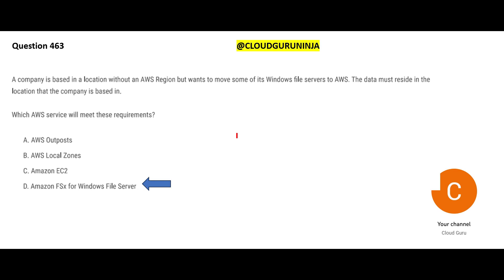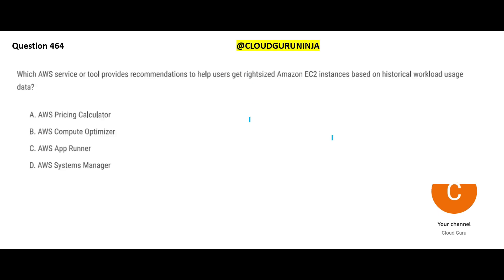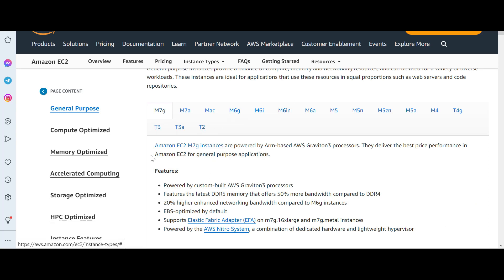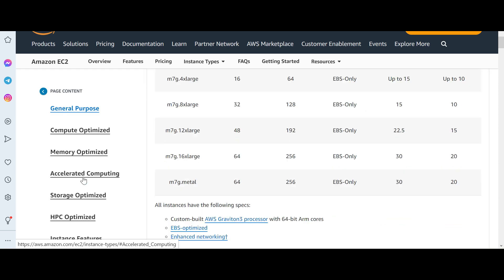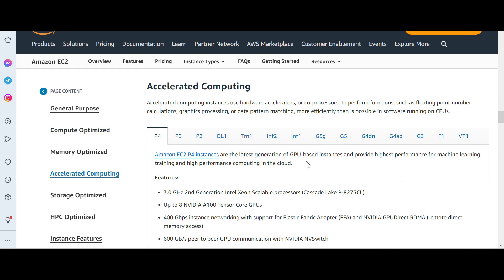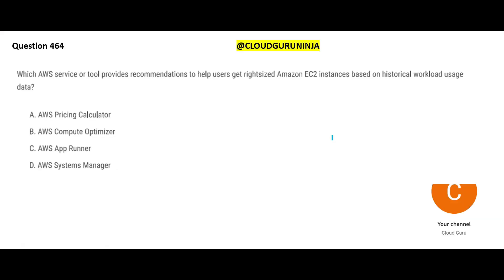Now suppose you need to size an EC2 instance and your project manager asks: should I buy general purpose, compute optimized, memory optimized — M6G, T2, T3, P4, P3? What capacity do we need? You would say: let's look at historical workload usage to understand how much to plan, and then use the Compute Optimizer to calculate the right size.